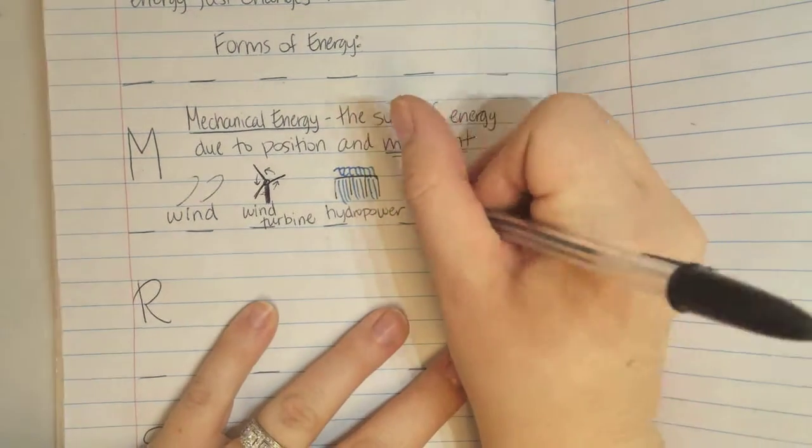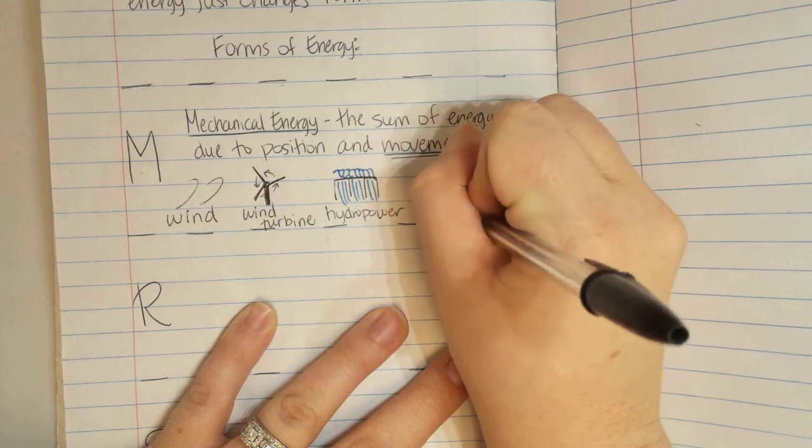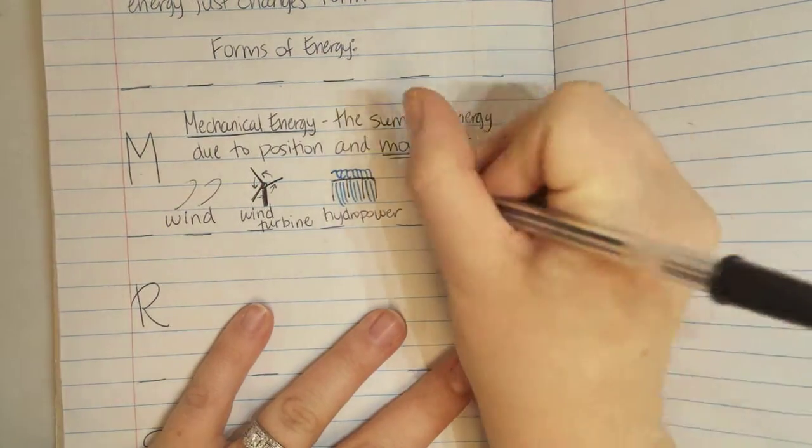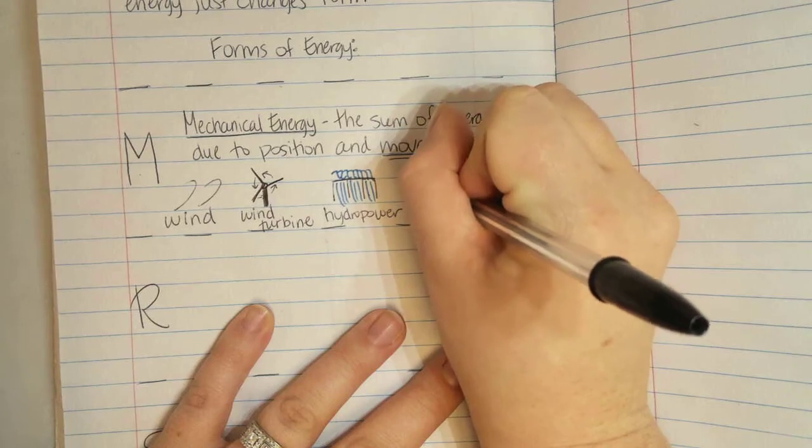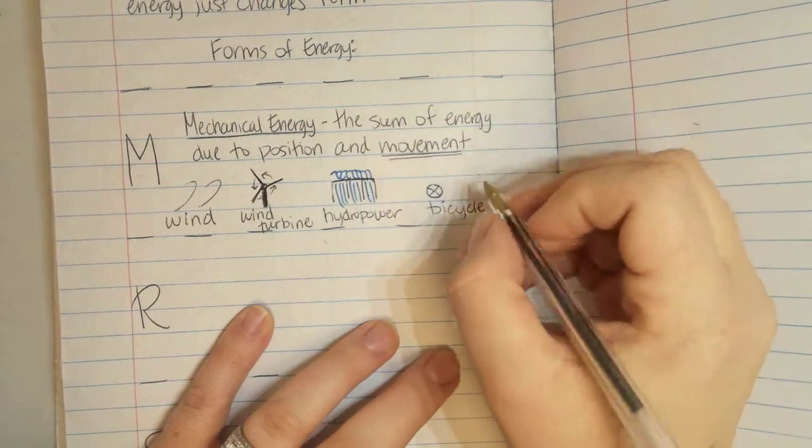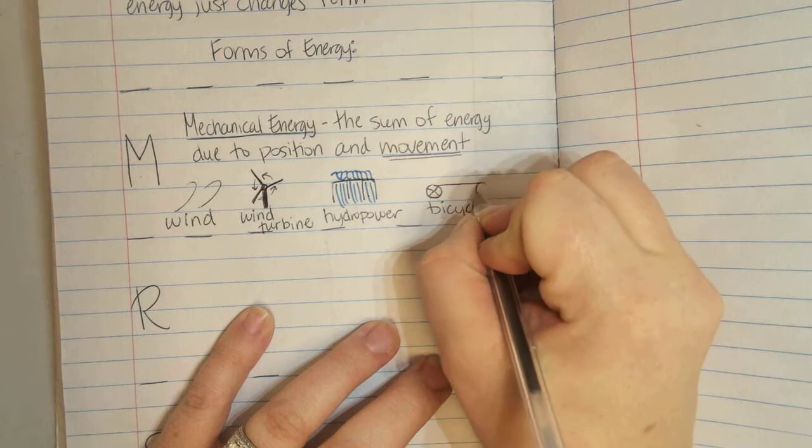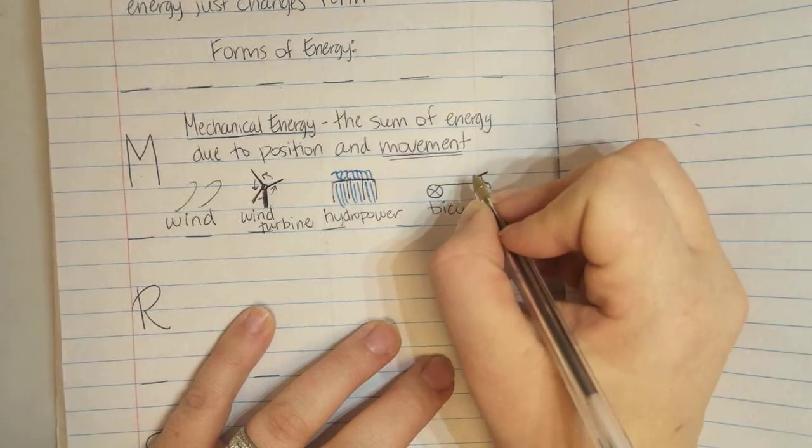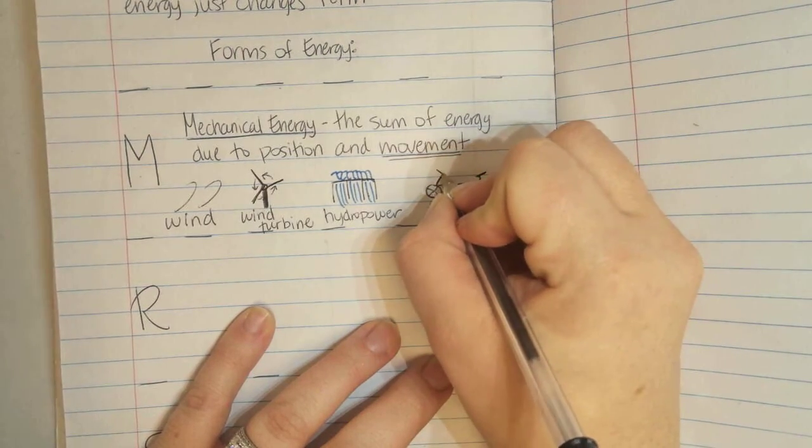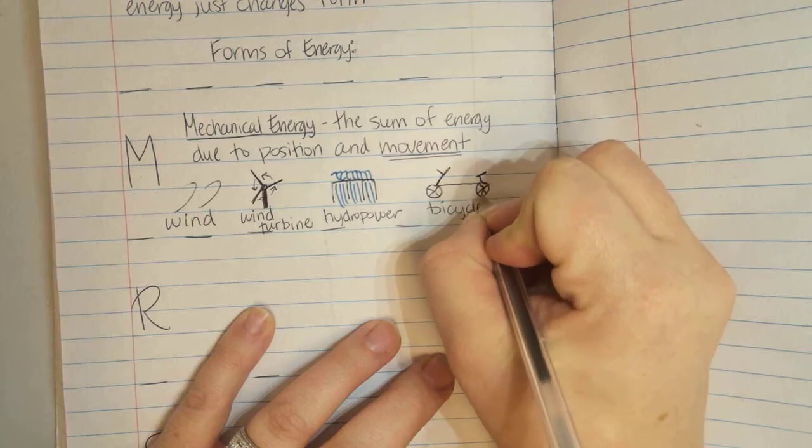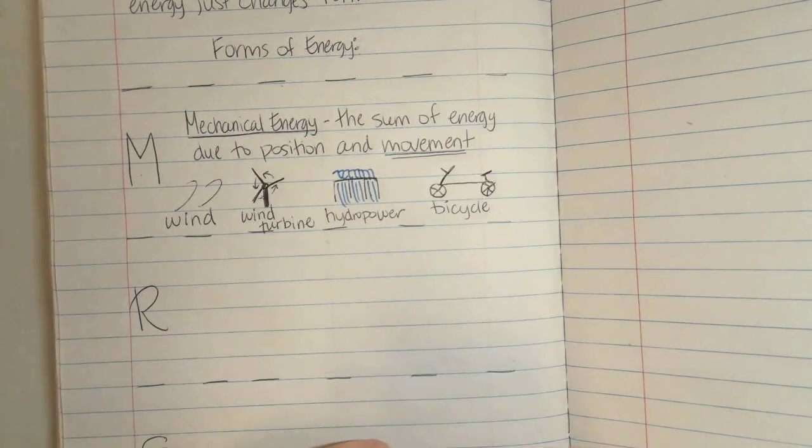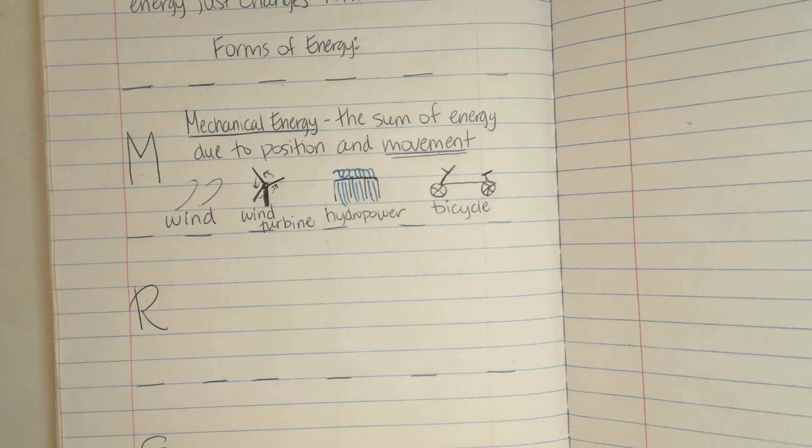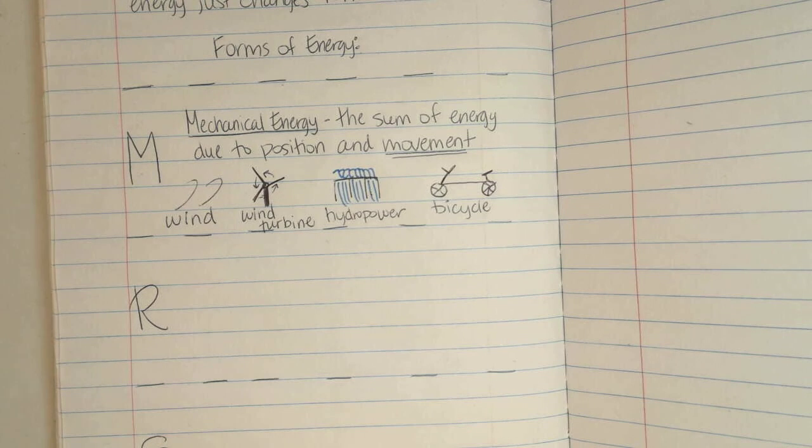Then my last example, I'm going to draw a bicycle. This is where you can't judge my artwork. So a bicycle or a car or anything that is moving would be considered mechanical energy. Here's my seat and my handlebars over here. Again, don't judge my drawings. So that's mechanical energy. Anything that is moving is an example of mechanical energy or it has mechanical energy.